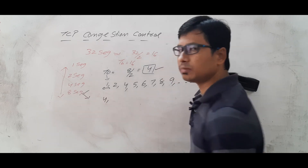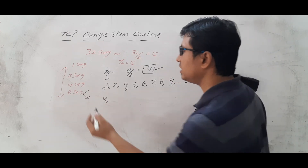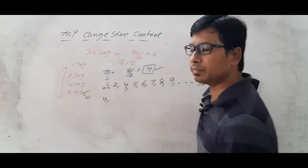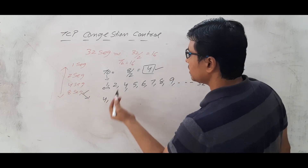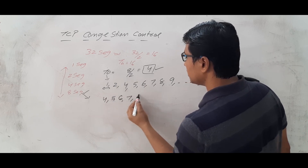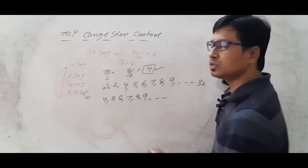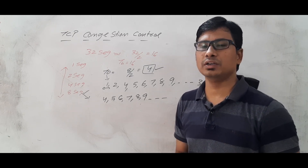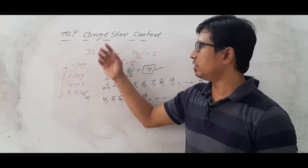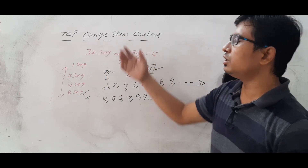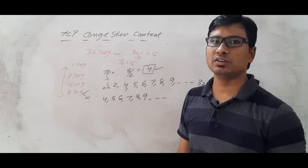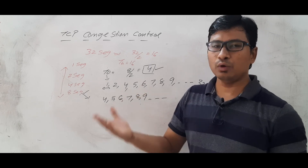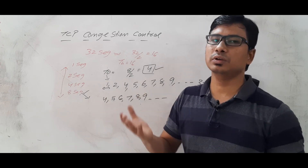Previously, 4 segments were delivered successfully; when you sent 8 it failed. So with early detection, you resume from 4 segments: if delivered, go to 5, 6, 7, 8, 9 — the congestion avoidance phase. This is how TCP does congestion control, including the slow start phase, congestion avoidance phase, and congestion detection phase — detected either by timeout or three duplicate acknowledgements.